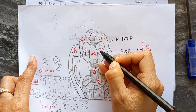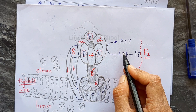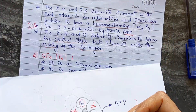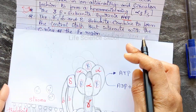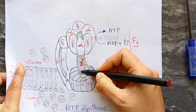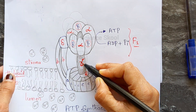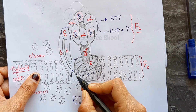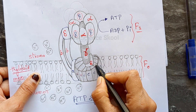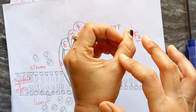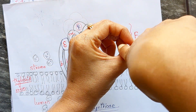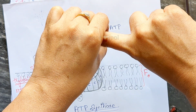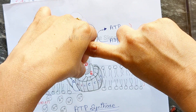The gamma, delta, and epsilon subunits combine to form the central stalk, which interacts with the c-ring of the F-naught region. As you can see in the diagram, gamma, delta, and epsilon form the central stalk, and this central stalk inserts into and interacts with the c-ring. The c-ring rotates while the central stalk is fixed within it.